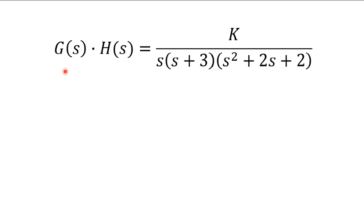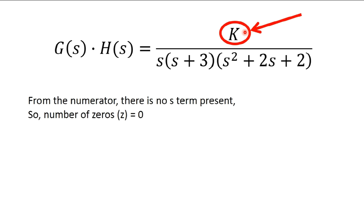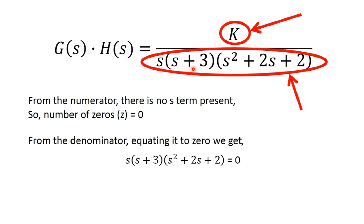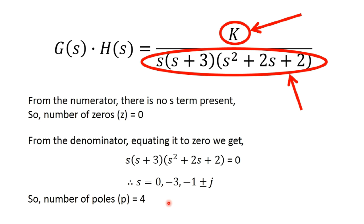Here, G(s)H(s) = K / [S(S+3)(S²+2S+2)]. From the numerator, there is no S term present — only K, the gain. So the number of zeros is equal to 0. From the denominator, equating it to 0, we get S(S+3)(S²+2S+2) = 0. The poles are: 0 (from S), −3 (from S+3), and −1±j (from the quadratic equation). So the total number of poles is 4.